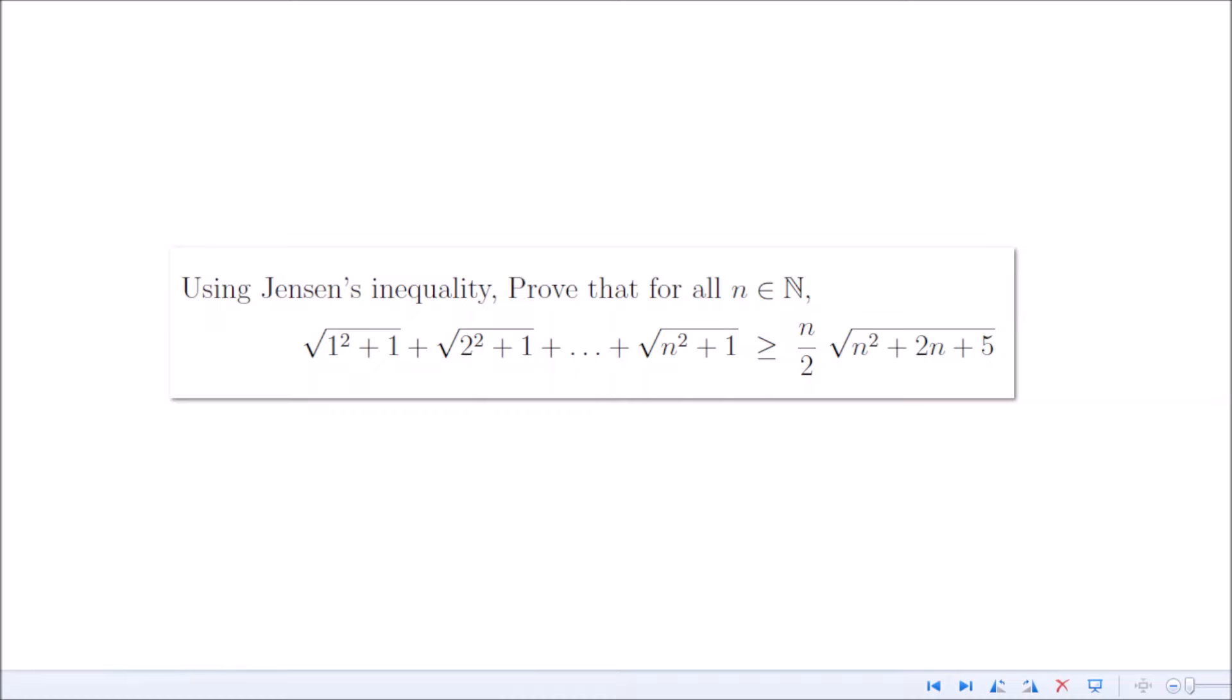Now if you look at the left-hand side, it's square root of something squared plus one. The square root is fixed, plus one is fixed, but the term inside the square root changes. By looking at this, one can choose f(x) to be square root of x squared plus one. That's the guess you should make by looking at the inequality.